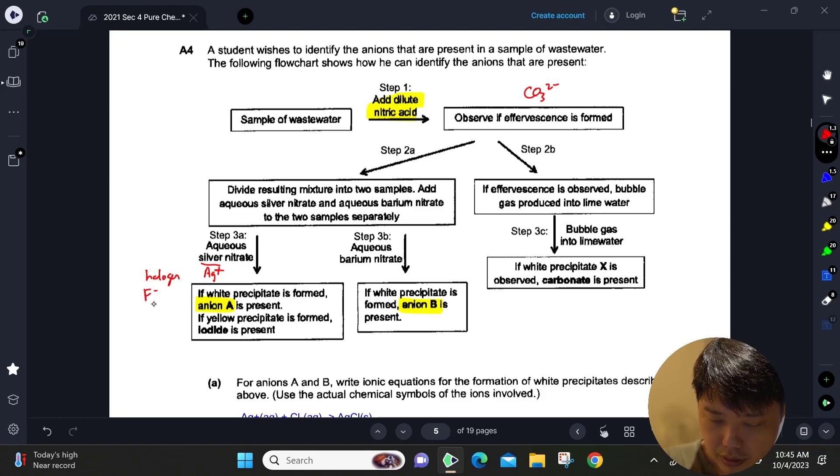And then barium nitrate—we are basically looking for sulfate anion because if it is present you form barium sulfate which is a white precipitate.